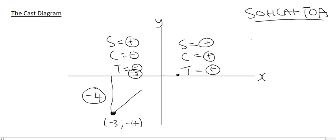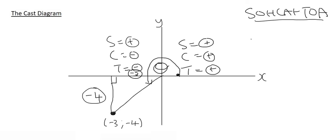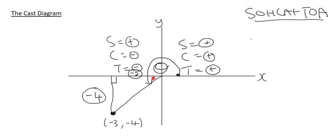The angle technically goes all the way around from the positive x-axis until it hits the line in the third quadrant, and that whole big angle we call theta. But for our calculations, we base everything on that little corner angle. Using Pythagoras again to find the diagonal, you get 5, and you always keep that as a positive. Now we can calculate sin, cos, and tan of that triangle.